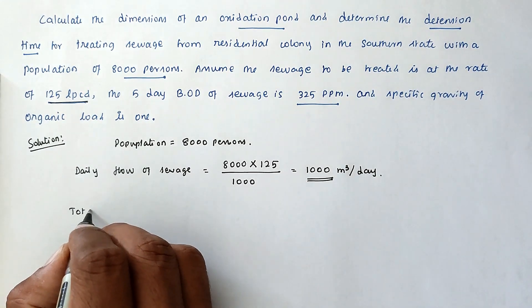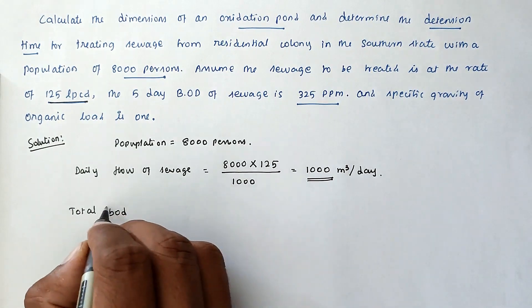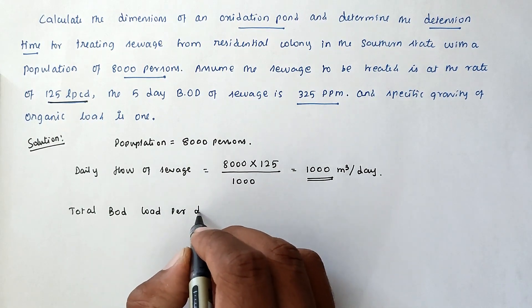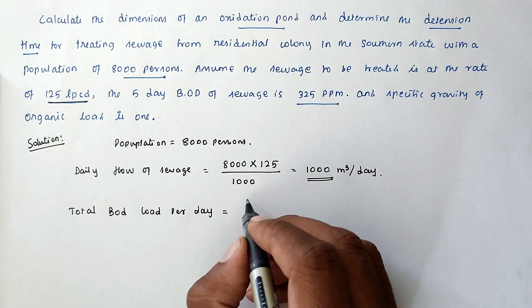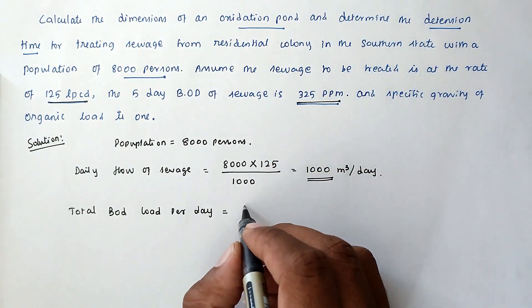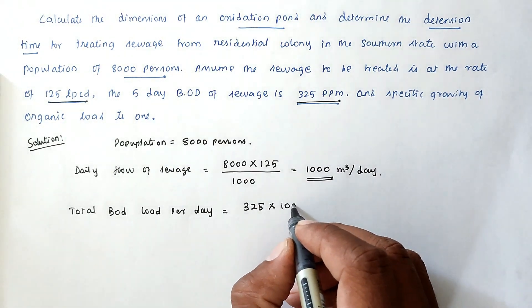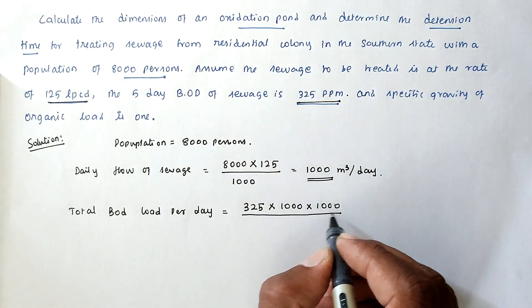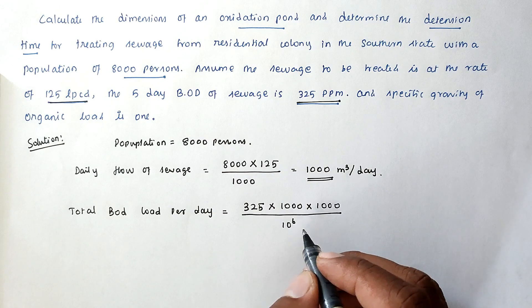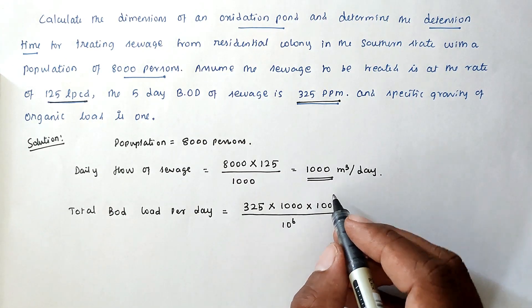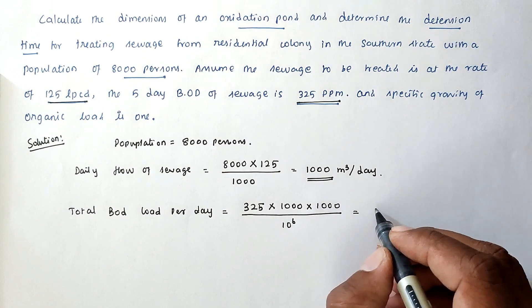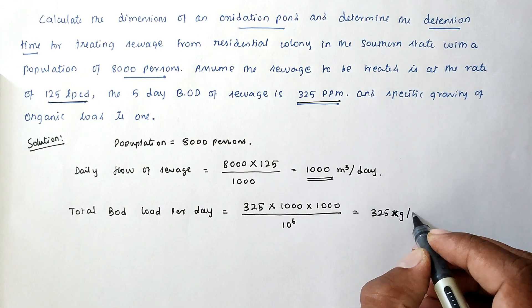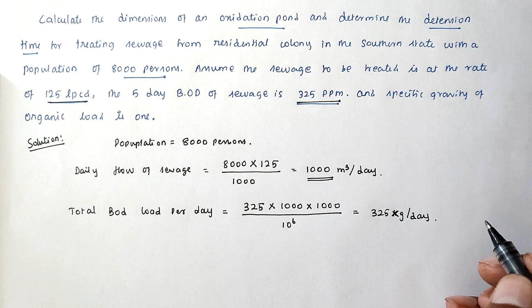Now the total BOD we have to calculate. Total BOD load per day equal to: the BOD of sewage is 5-day 325, so 325 into 1000 meter cube into 1000 divided by 10 power 6. We have to convert meter cube into kg. So now 325 kg per day.